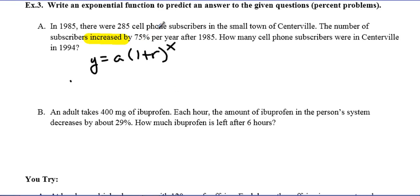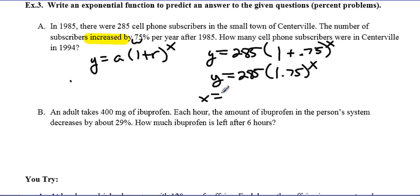Let's plug in our numbers, what we know so far. Our initial value is 285 people. My rate I'm going to use as a decimal, so I'm going to move that 2 to the left, and that's 0.75. I can do my addition inside, so I have y = 285(1.75)^x, where X is going to be the number of years after 1985. So 1985 is considered year 0.